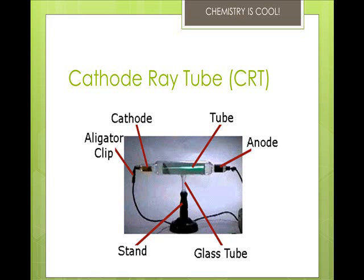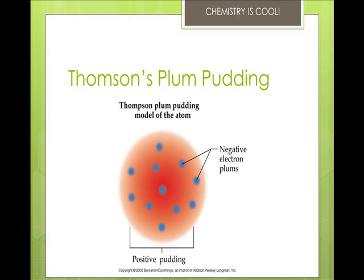In his experiments, Thompson used many different combinations of metals and gases. The beam produced, however, was always the same. By the amount the beam bent, he could find the ratio of the charge to the mass. It was the same with every material, because he concluded that there was the same type of piece in every kind of atom making this behavior. This piece was found to be the electron.